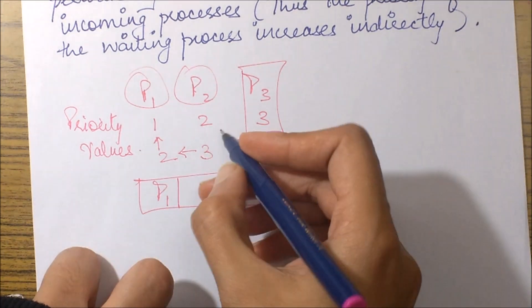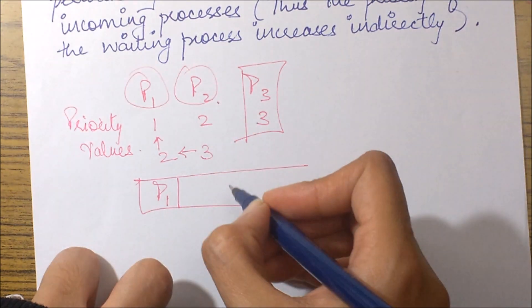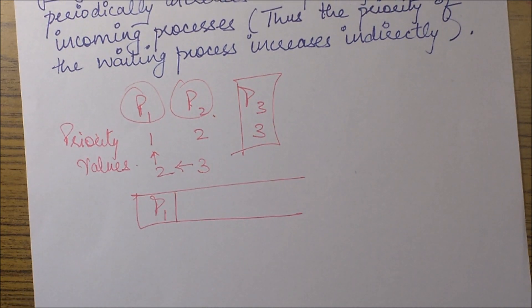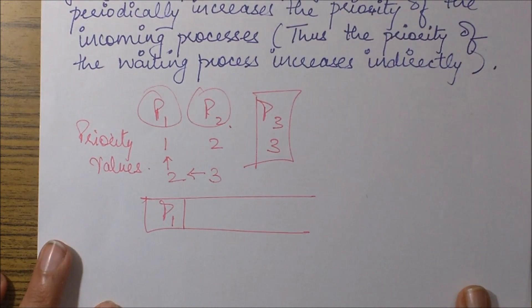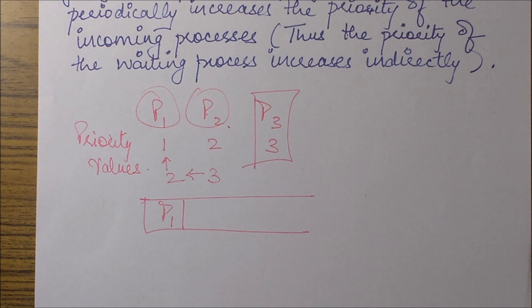In the example just mentioned, P2 now has a priority higher than both of the others. That's all for the aging technique and the starvation problem. In the next session I'll be taking up the round robin algorithm, and then finally we'll be taking up a very important question from GATE. Thank you, and please keep following for more good work coming up.